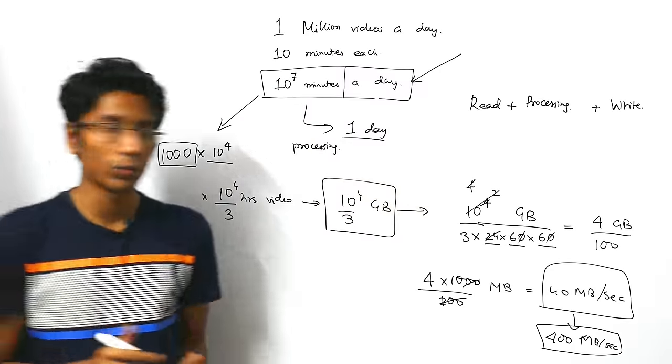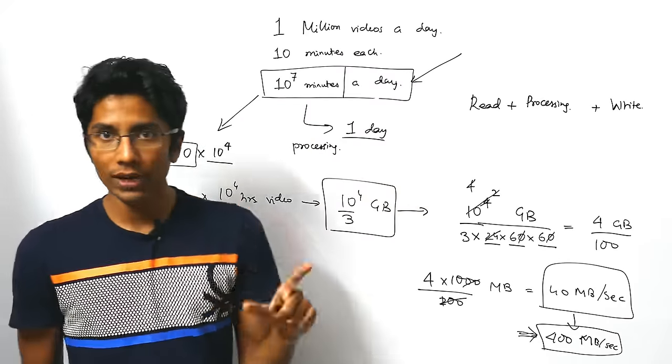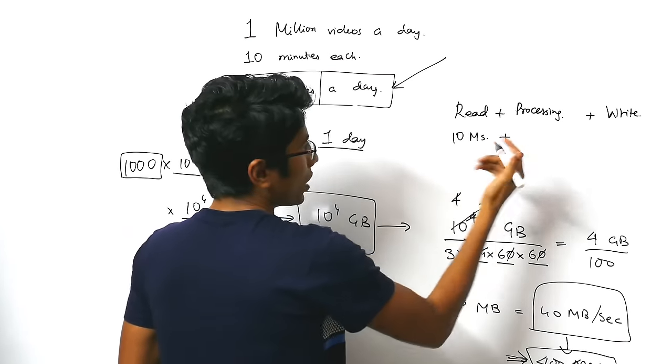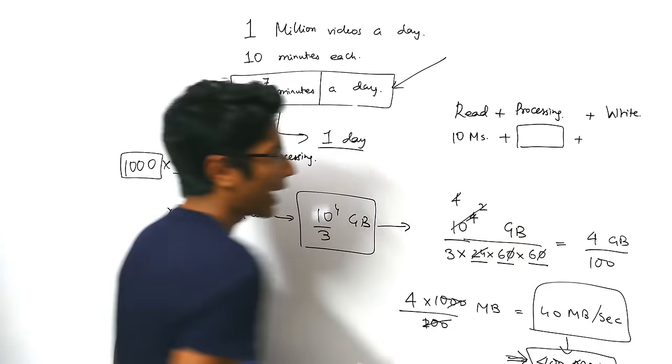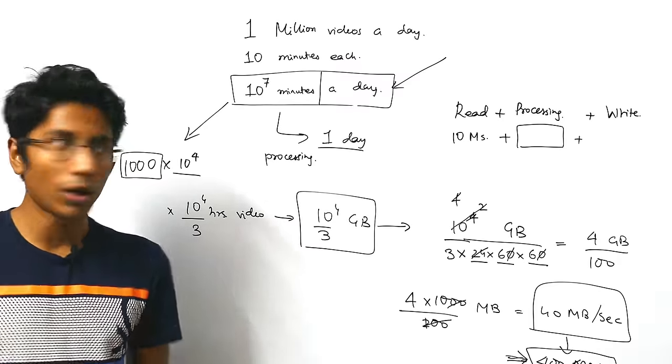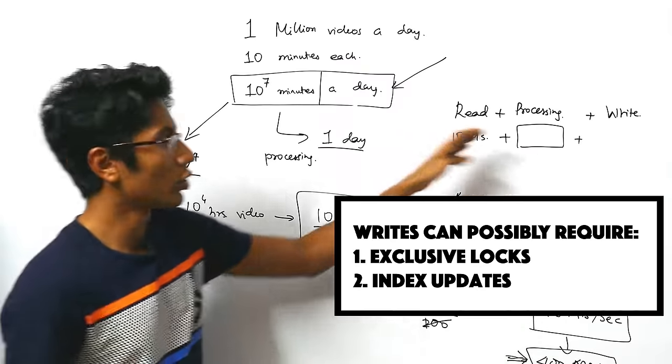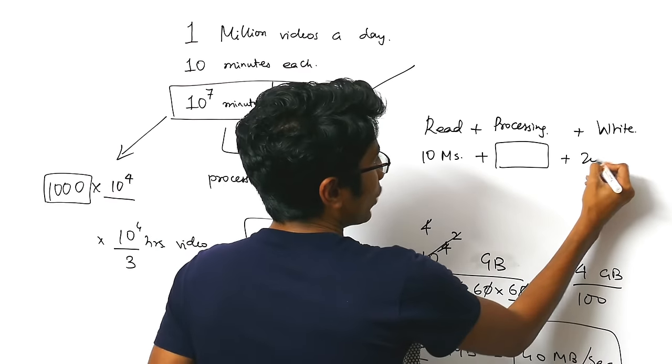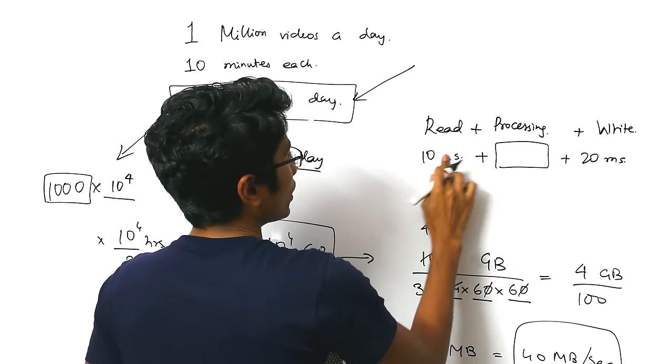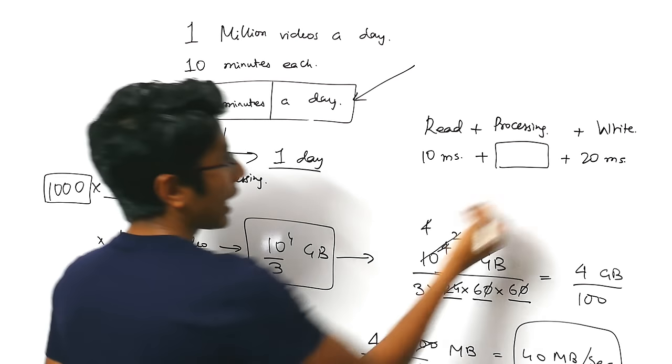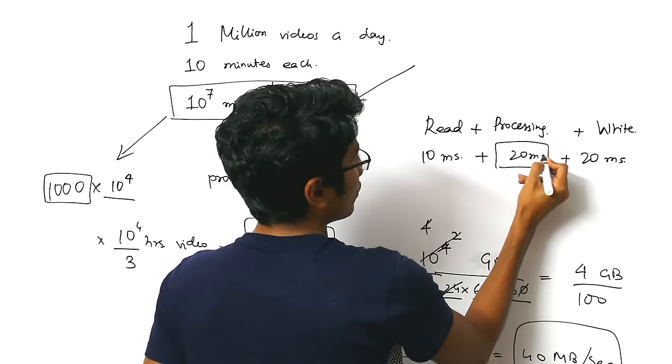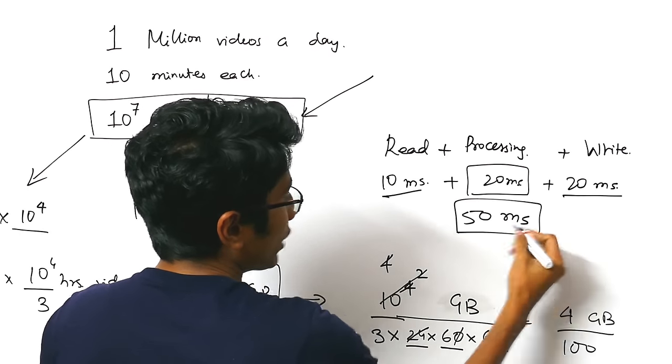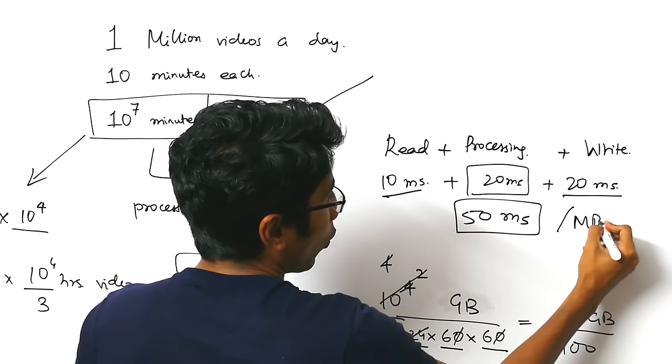To read a single MB of data from disk takes you about 10 milliseconds. Plus the processing time is something we'll have to assume. And a write, I'm assuming to be twice the amount of time required for a read. As I said, it's an interview. You can make assumptions. As long as they're sensible, they're going to be accepted. So 20 MS write speed, 10 MS read speed and processing. I'll just put that to be 20 MS again. I/O operations are usually slow. So this makes sense. You have 50 MS. You need 50 milliseconds to process one MB of data.